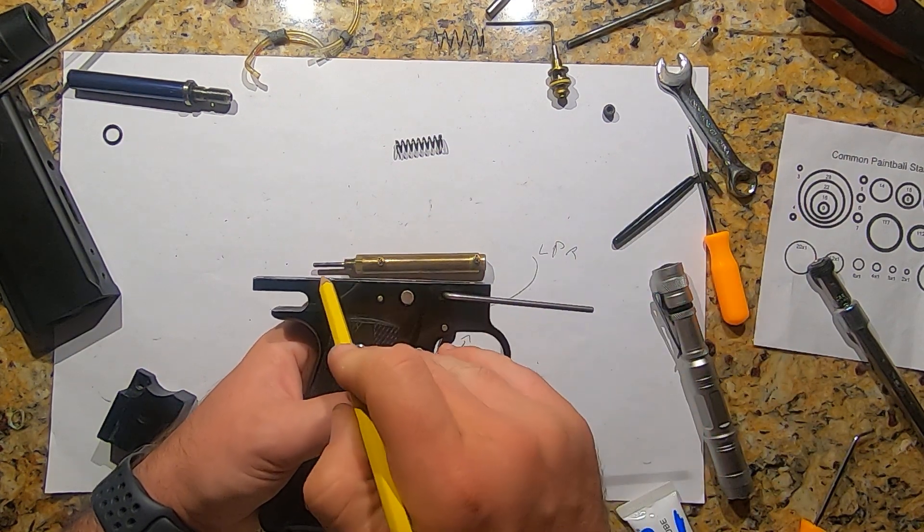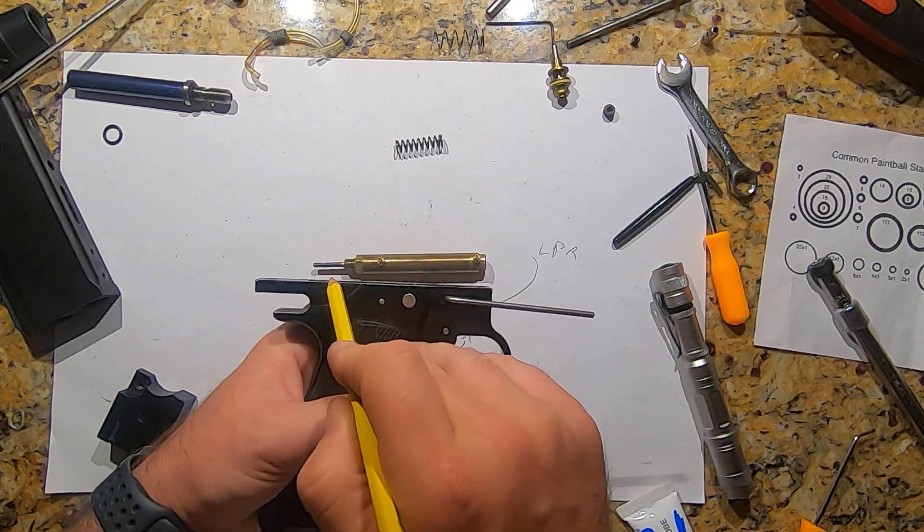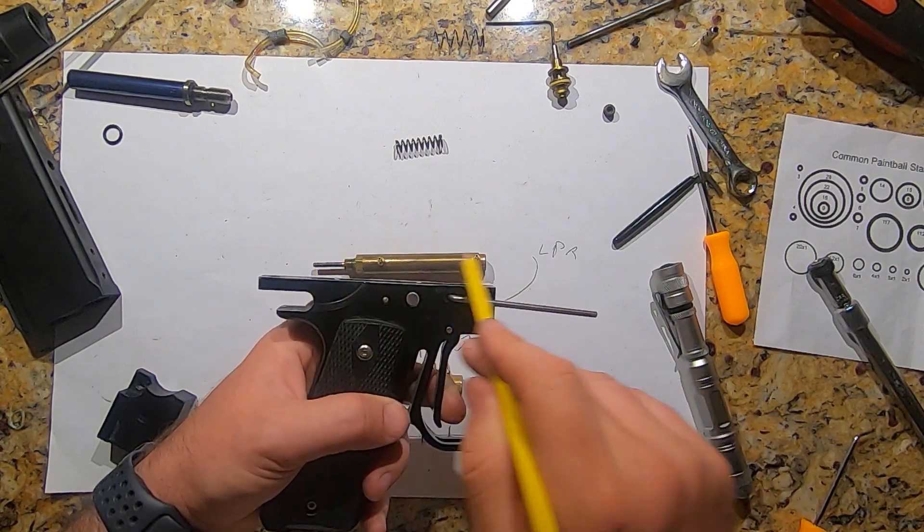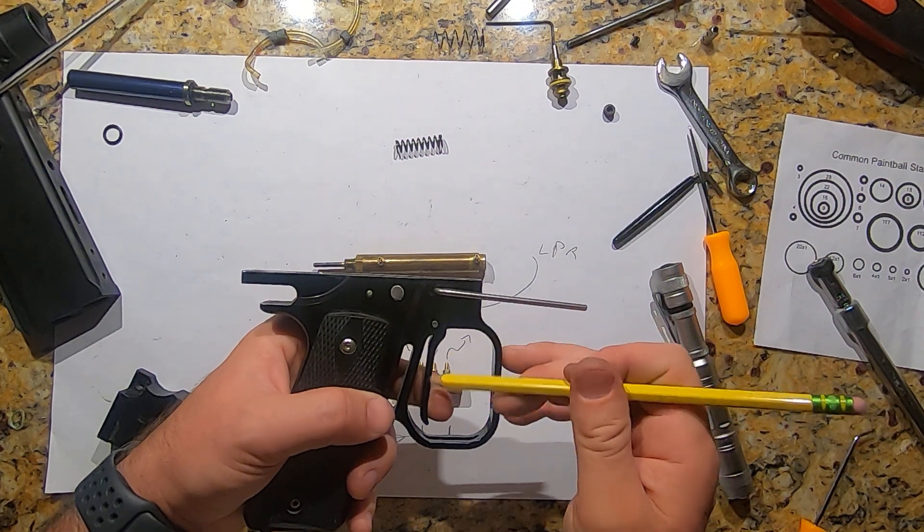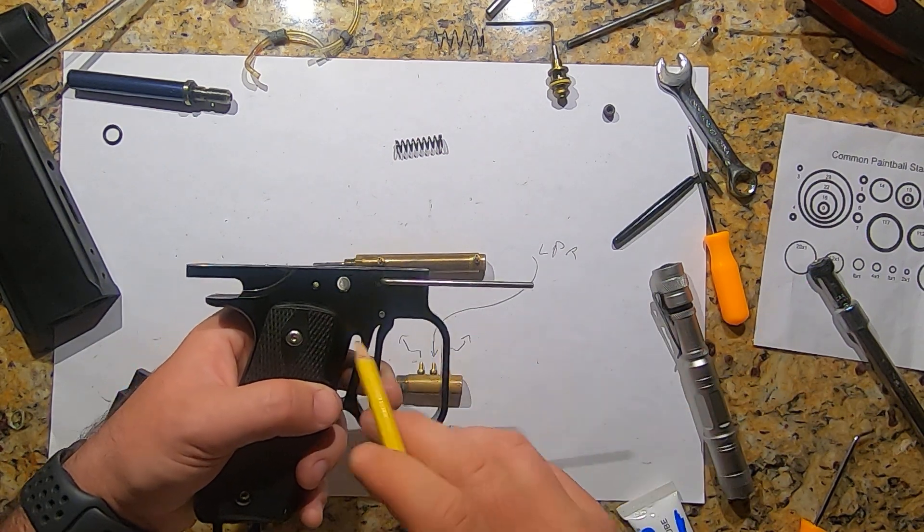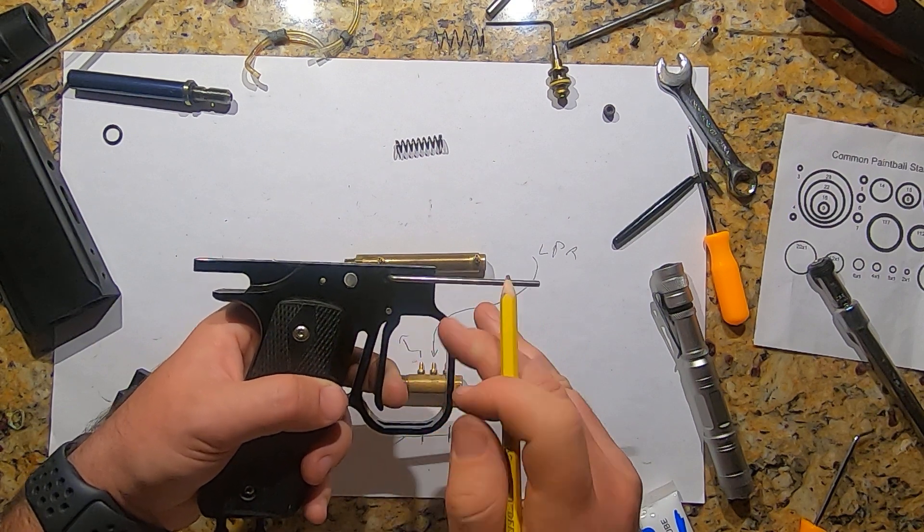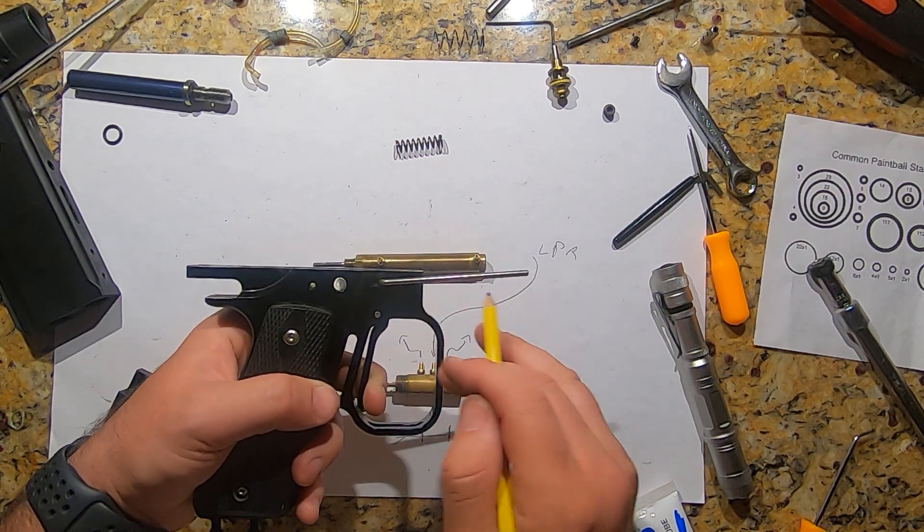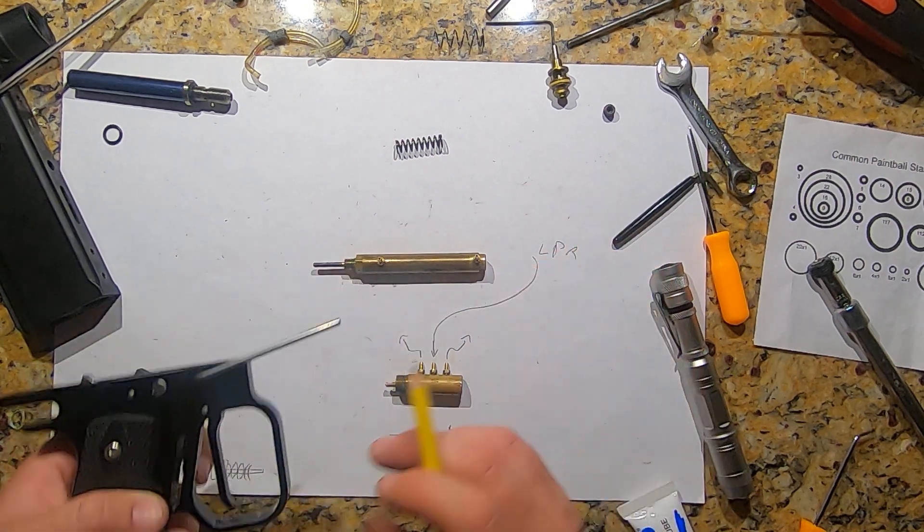where the sear drops enough to allow the striker to move forward. At this point, we don't want this valve open yet. We want that to open after we get forward - all the way forward, then we want this thing open.